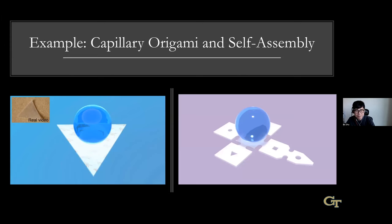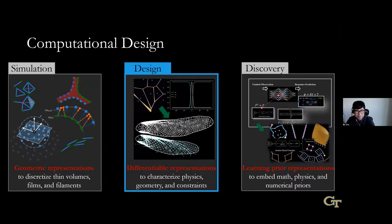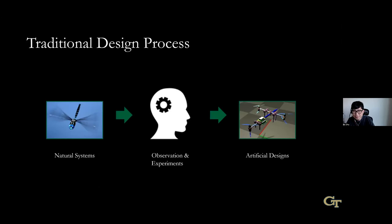That's the first category of my research: developing new geometric data structures to solve simulation problems. Next, I'll briefly talk about the second and third categories: design and discovery. For design problems, we have some observation and want to come up with a design. If we have computer simulation, the traditional process involves simulation, human observation, and iteration. The modern way is to make the physics differentiable, computing derivatives or gradients of the design variable to guide the search for optimal design automatically.